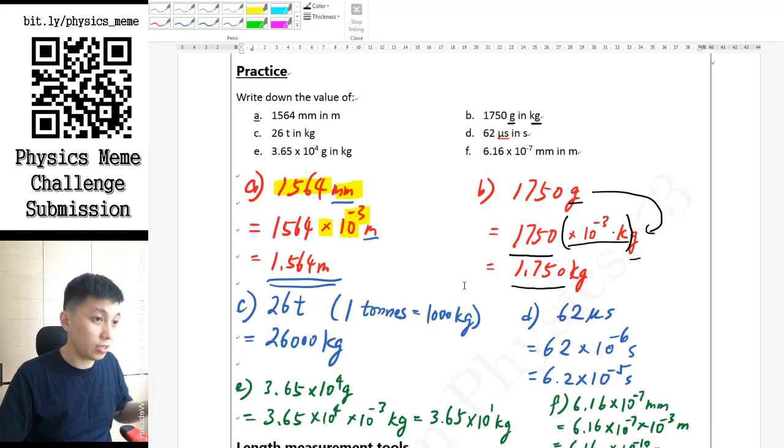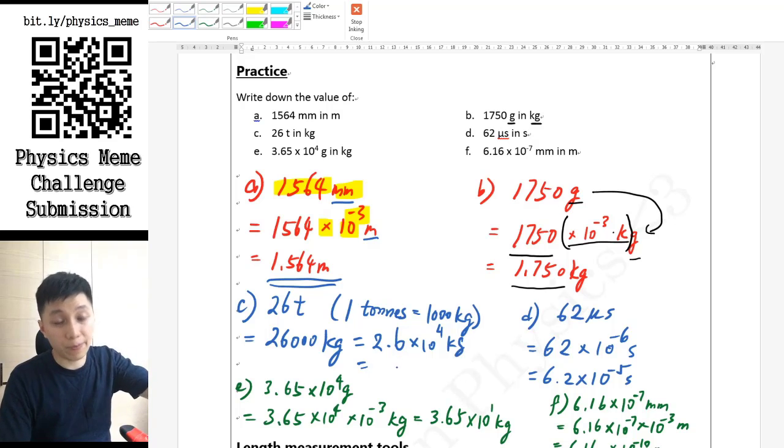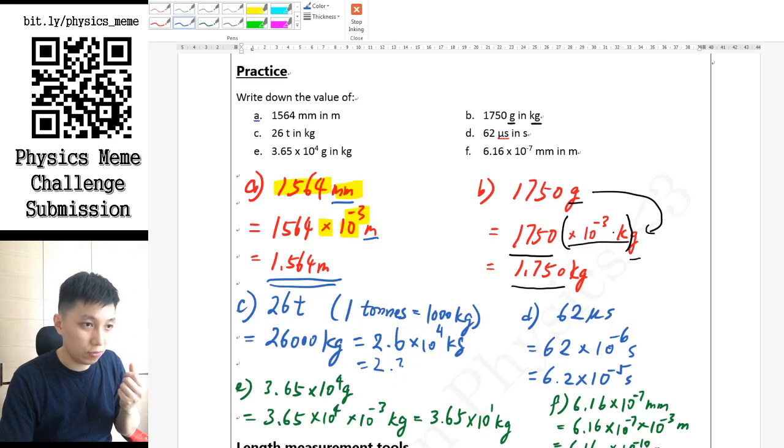You just multiply by 1000, so you get 26000 kg. If you want to, you can even express it in terms of scientific notation: 2.6 times 10 to the power of 4 kg, or 1 megagram.